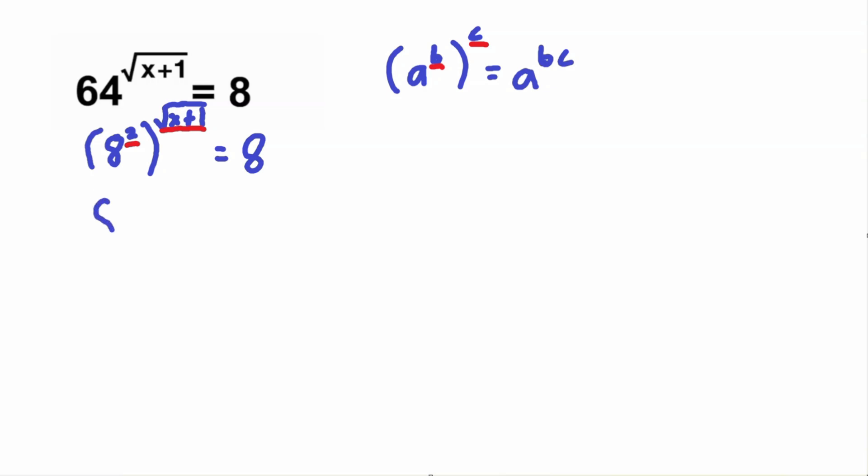So 8 squared to the square root of x plus 1 is equal to 8 to the 2 times square root of x plus 1, and this is equal to 8.